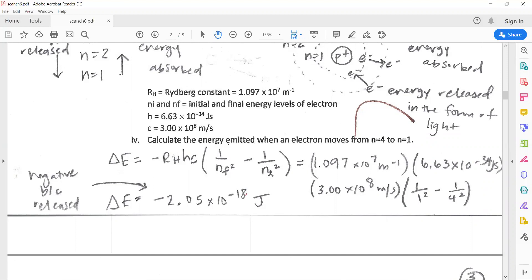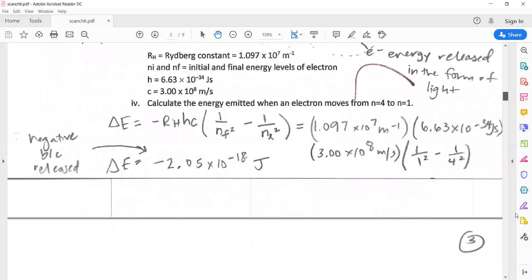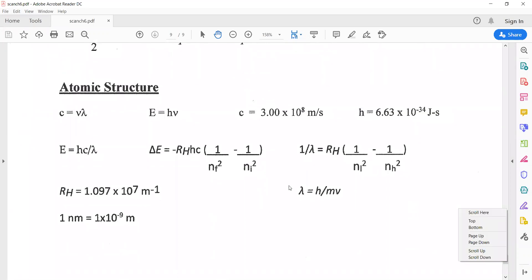It says calculate the energy emitted when an electron moves from n equals four to n equals one. If I run over here to the equation sheet, you'll see a couple different equations that look similar. The main difference is that this first one is used to determine energy that's been absorbed or released. The second one is used to find wavelength of the light that is being emitted. So you choose the one based on what you're trying to determine.